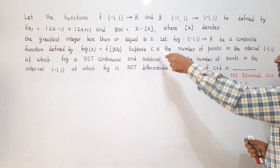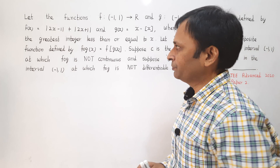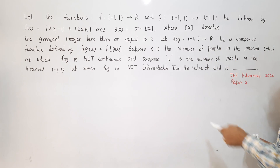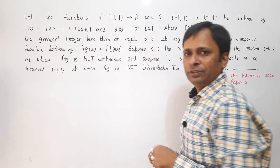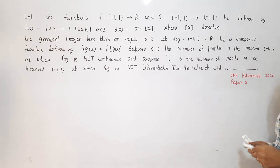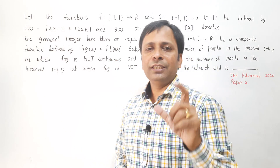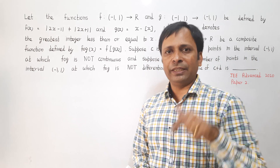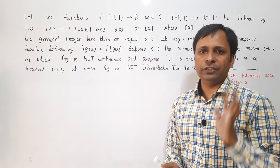The question then says that c is the number of points in the interval from minus 1 to 1 where the composite function fog is not continuous, and d is the number of points in the open interval from minus 1 to 1 where fog is not differentiable. We have to find the value of c plus d — the number of points where fog is not continuous plus the number of points where fog is not differentiable.